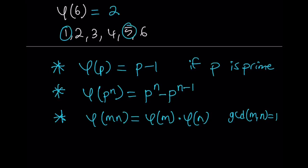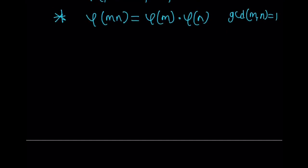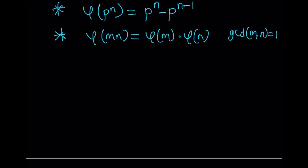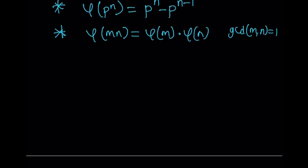This is really useful because if you have a composite number, you can break it into prime factors and write them separately, since different prime powers are always relatively prime — for example, 2^7 and 5^10 are always relatively prime. This multiplicativity is essentially the key formula I'm going to use in this solution.